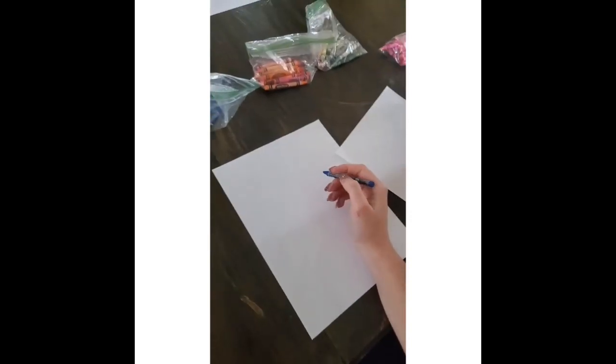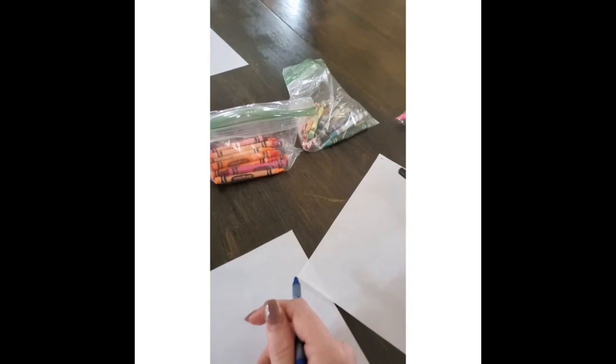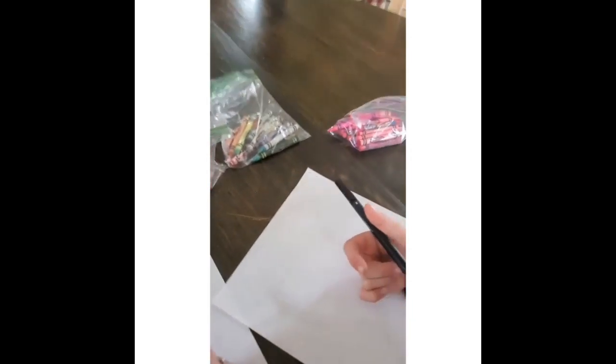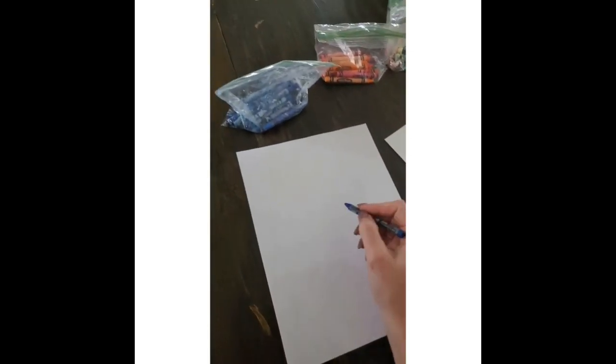So we're just going to do this with crayons. You can pick any colors you want—we have blue, orange, special crayons, and pink. I have Drake helping me with the video today. All right, so today we're going to draw a dinosaur out of shapes.